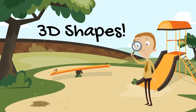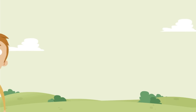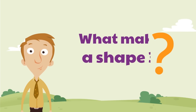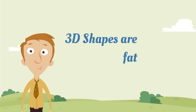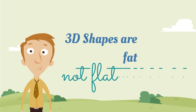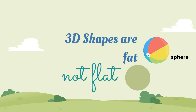We're ready to learn the 3D shapes! If you struggled through the quiz, you might want to watch the first part again. Otherwise, let's get started. It's important to remember what makes a 3D shape a 3D shape — there's an old rhyme that says 3D shapes are fat, not flat. You can see that with the sphere versus the circle: the circle is flat, but the sphere is three-dimensional.